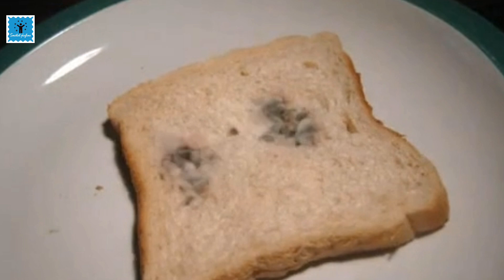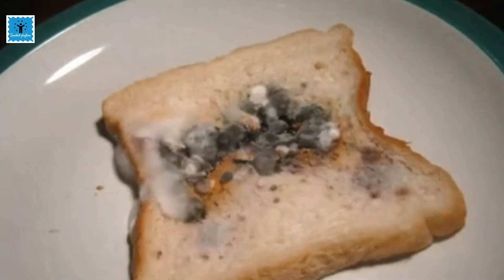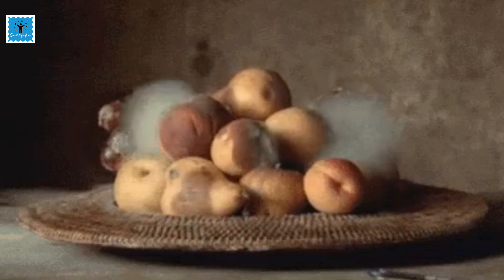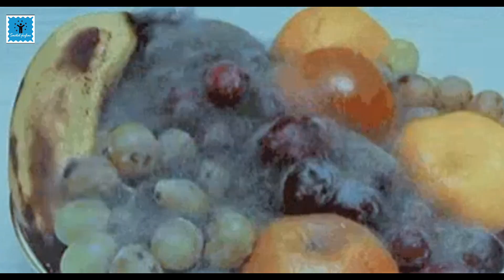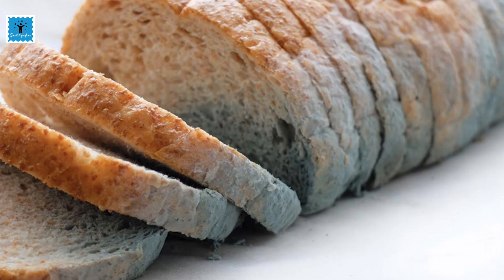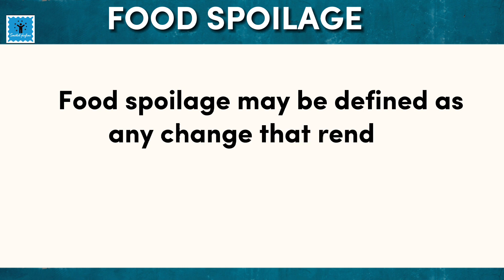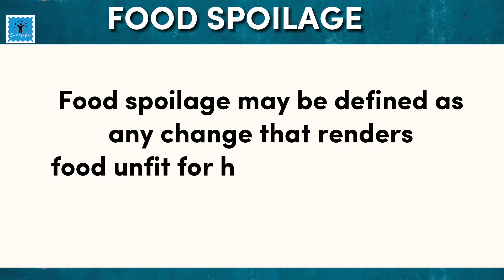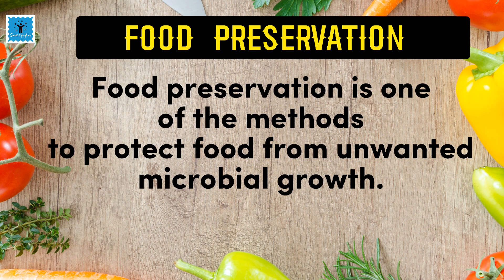You may have seen that if bread is left unused under warm and moist conditions, it is attacked by fungus. Microorganisms spoil our food, and the spoiled food emits bad smell, has a bad taste, and changes its color too. Any change which occurs in a food item and makes it unfit for human consumption is considered food spoilage.